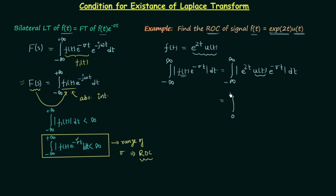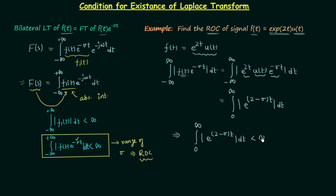The integral becomes the integral from 0 to infinity of e^(2t)·e^(-σt) dt, which we can write as e^((2-σ)t) dt, and this must be less than infinity. This integration will be less than infinity when (2 - σ) is negative, so 2 - σ < 0, which means σ > 2. So we have the range of σ, and now we will obtain the region of convergence.